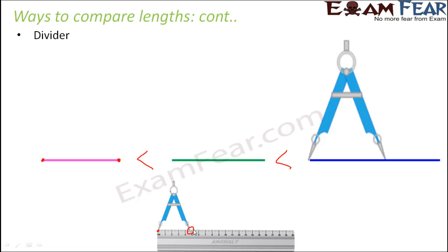So observe the reading carefully, and this is how you can precisely find out the exact length. So using the divider you set the opening of the divider in accordance with the length of the line segment, then place the divider over a ruler and find out the exact length. So in this way we can make use of a divider to compare lengths.